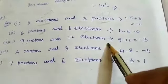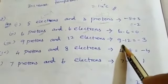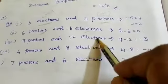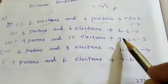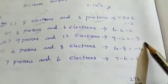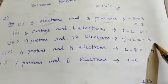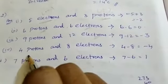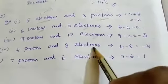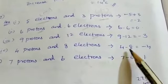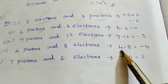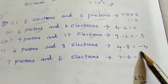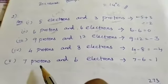Third part: 9 protons means plus, minus 12 electrons means minus 12, that's equal to minus 3. Fourth sum: 4 protons and 8 electrons. 4 protons means plus 4, 8 electrons means minus 8, equal to minus 4.